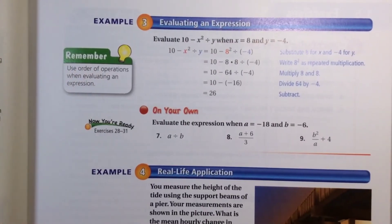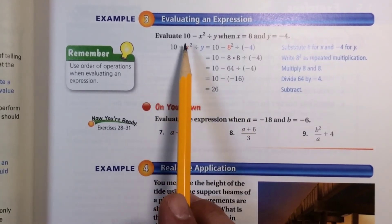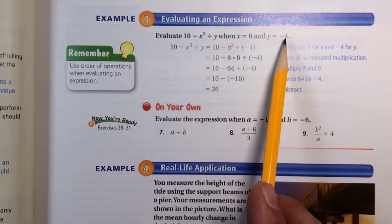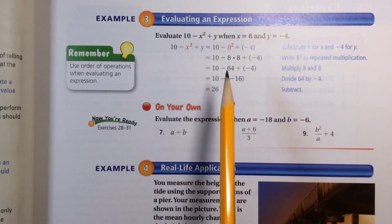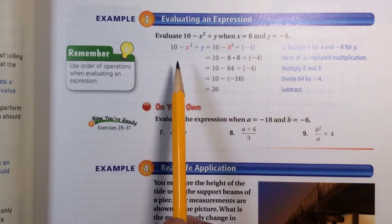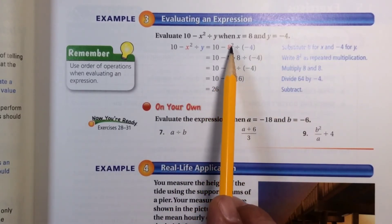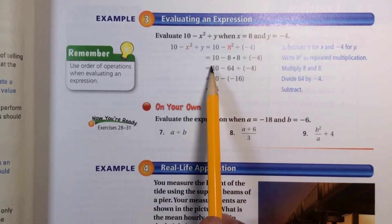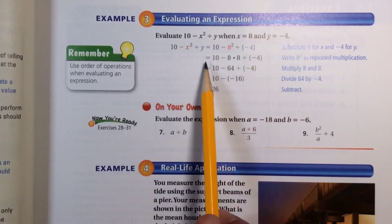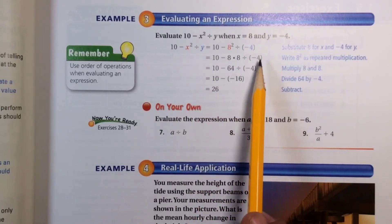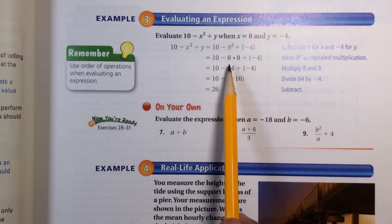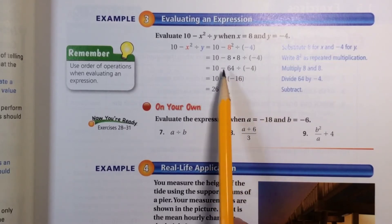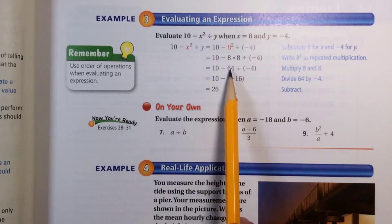This third example is evaluating an expression: evaluate (10 minus x squared) divided by y when x equals 8 and y equals negative 4. The first thing we do is substitute in 8 for x and negative 4 for y, making the problem (10 minus 8 squared) divided by negative 4. Following order of operations — no parentheses with operations inside — we go to exponents: 8 times 8 is 64. Now we have 10 minus 64 divided by negative 4. We don't do that subtraction yet because order of operations says multiply and divide from left to right.